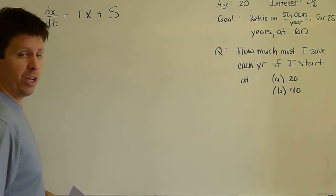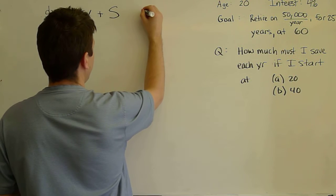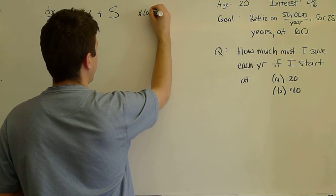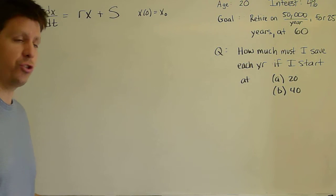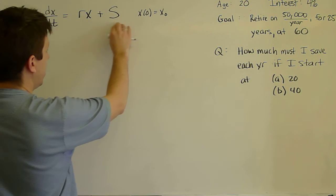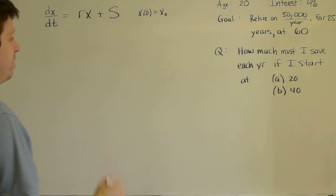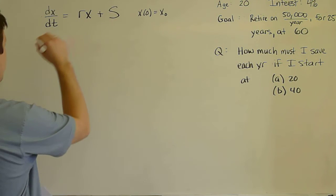And just in general, we solve this problem in general. Assume we have some initial condition X(0) = X₀ or whatever. These are just parameters. S, R is a parameter, S is a parameter, X₀ is a parameter in this solution. And we solve this problem.